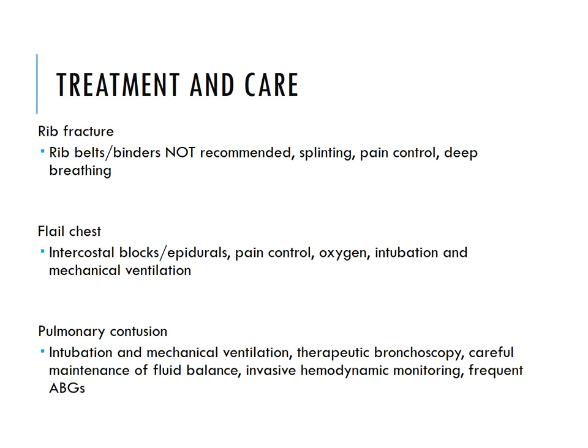Treatment for rib fractures: rib belts and binders are not recommended. Splinting with a lung pillow or taped blanket helps with coughing and movement. For flail chest, intercostal nerve blocks or epidurals address severe pain. Supplemental oxygen, intubation, and mechanical ventilation may be required.